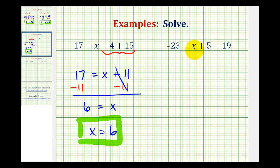Looking at our last example, again, notice on the right side, we have like terms here that we can combine before we solve for x. So positive 5 minus 19 would be negative 14, so we'll have negative 23 equals x, and then instead of putting plus negative 14, we'll write minus positive 14.